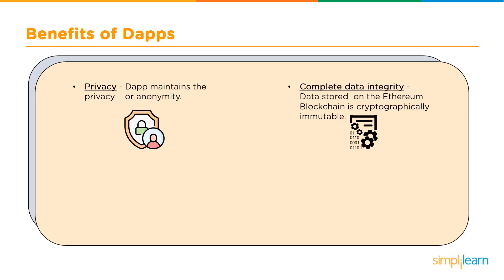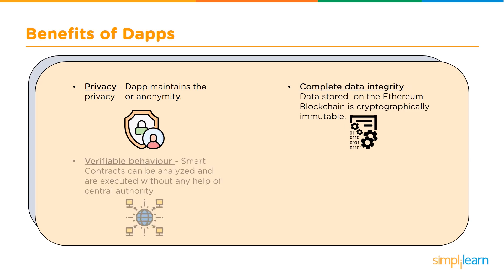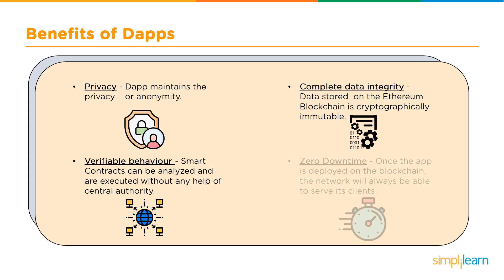Third is verifiable behavior — smart contracts can be analyzed and are bound to execute in predetermined ways without the need to trust a central authority. Fourth is zero downtime — once the app is deployed on the blockchain, the network as a whole will always be able to serve clients looking to interact with the contract of the dApp.